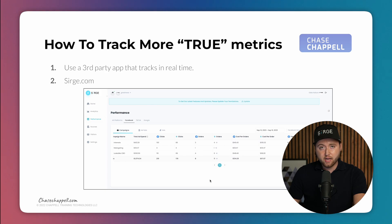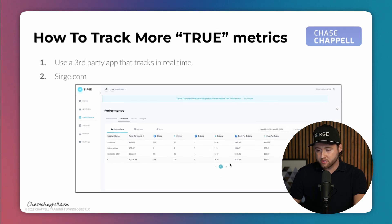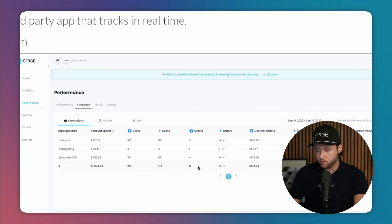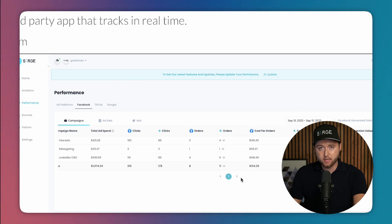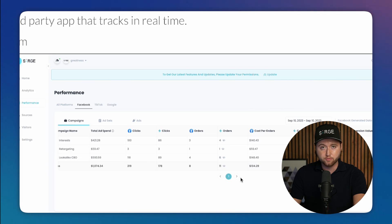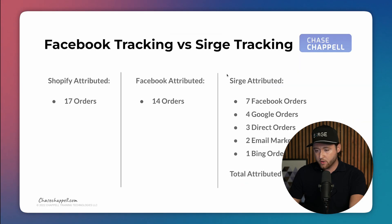What we're going to do is show you how to track a more true metric across your campaign analytics, reporting a more accurate return on ad spend and getting a truer picture of where your purchases are coming from, so you can better optimize your Facebook, TikTok, and Google ads. We can do this using a tool called Surge. Once you've connected Surge, you'll see a dashboard where you can see how many orders Facebook has reported versus how many Surge has reported. In one example, Facebook reported only eight orders for a day while Surge already picked up 11, due to delayed attribution and missed orders.